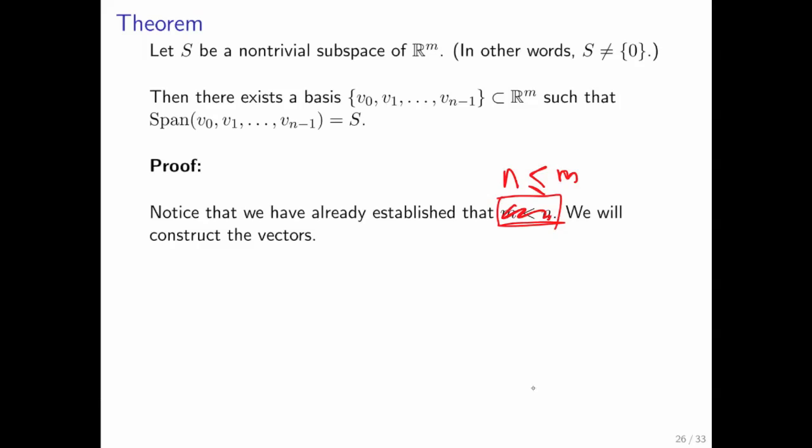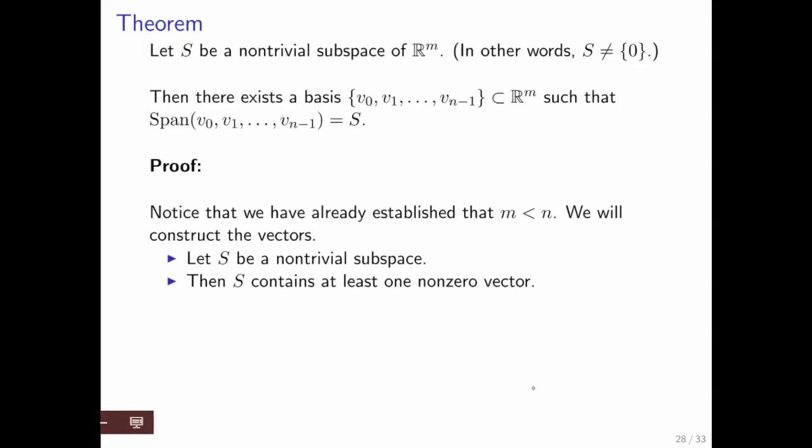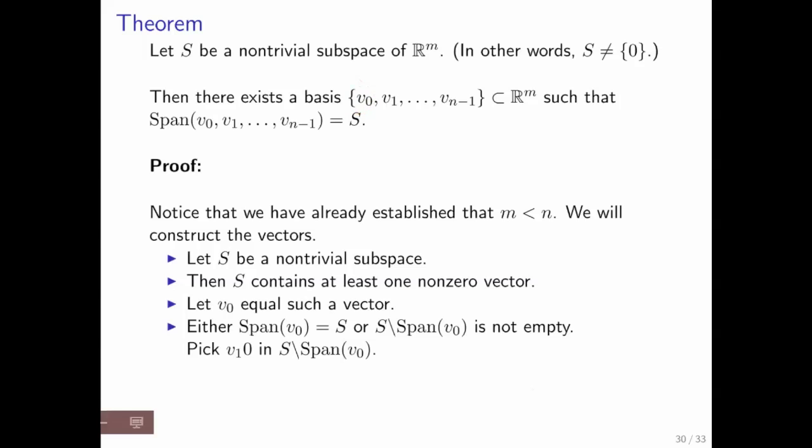What we're going to do is construct these vectors. We'll start with S as a non-trivial subspace, which means it has more than just a zero vector in it. So it has at least one non-zero vector. You can pick one such vector, throw it into the set of vectors that we're after. Remember, this is wrong here.